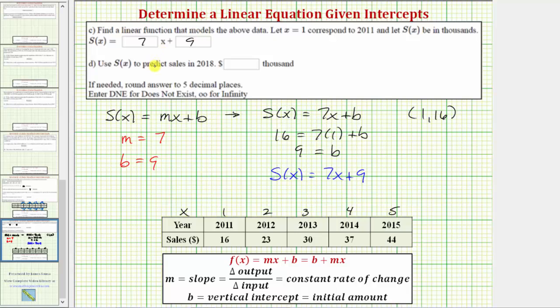For part D, we want to use S(x) to predict the sales in 2018. So using the given function, so using our function S(x), we need to make sure we use the correct x value for 2018.